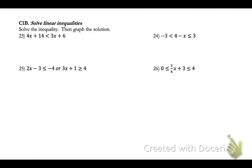We need to solve the inequality and then graph the solution. We'll need to get x's on one side and numbers on the other, like solving an equation. Move the 3x over, and you end up with x is less than negative 8 when you subtract the 14. To graph x is less than negative 8, draw a number line with a nice even scale with 0, 8, and negative 8. We're going to have an open circle at negative 8 because we don't have an equal-to mark, and then shade to the left to show everything less than negative 8.